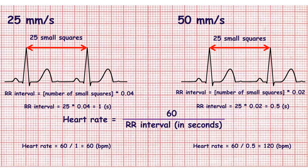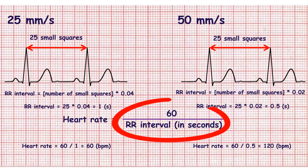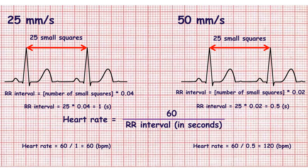Another method of determining heart rate is based on the calculation of the RR intervals. First, calculate the RR intervals by counting the number of small squares and multiplying by 0.04 if ECG speed is 25 millimeters per second, or multiplying by 0.02 if ECG speed is 50 millimeters per second. Then divide 60 by the RR interval measured in seconds.